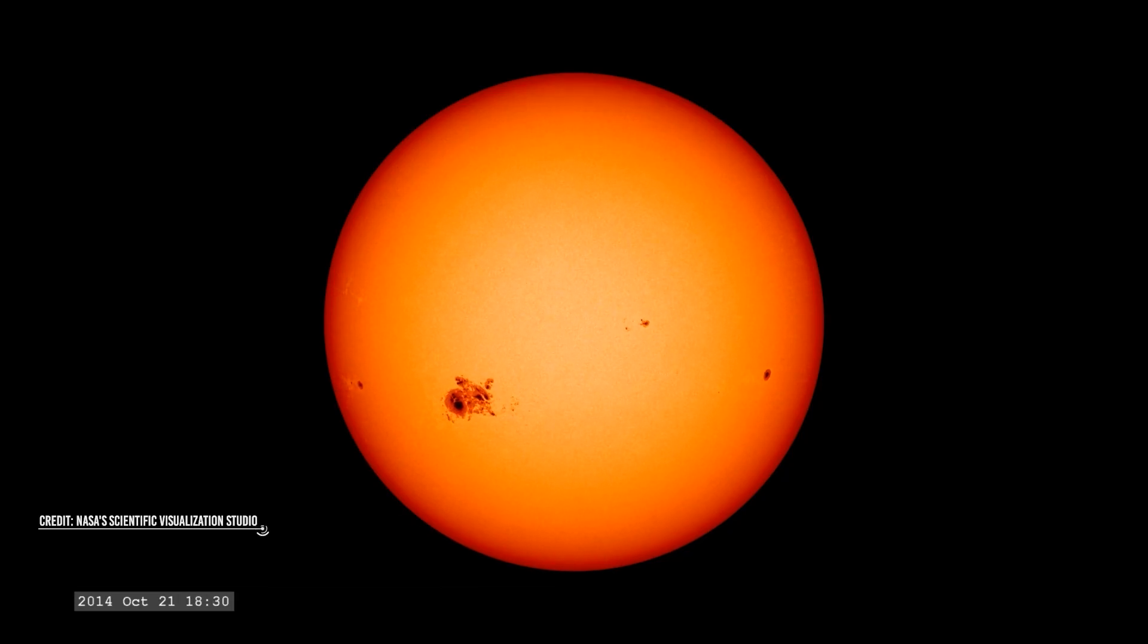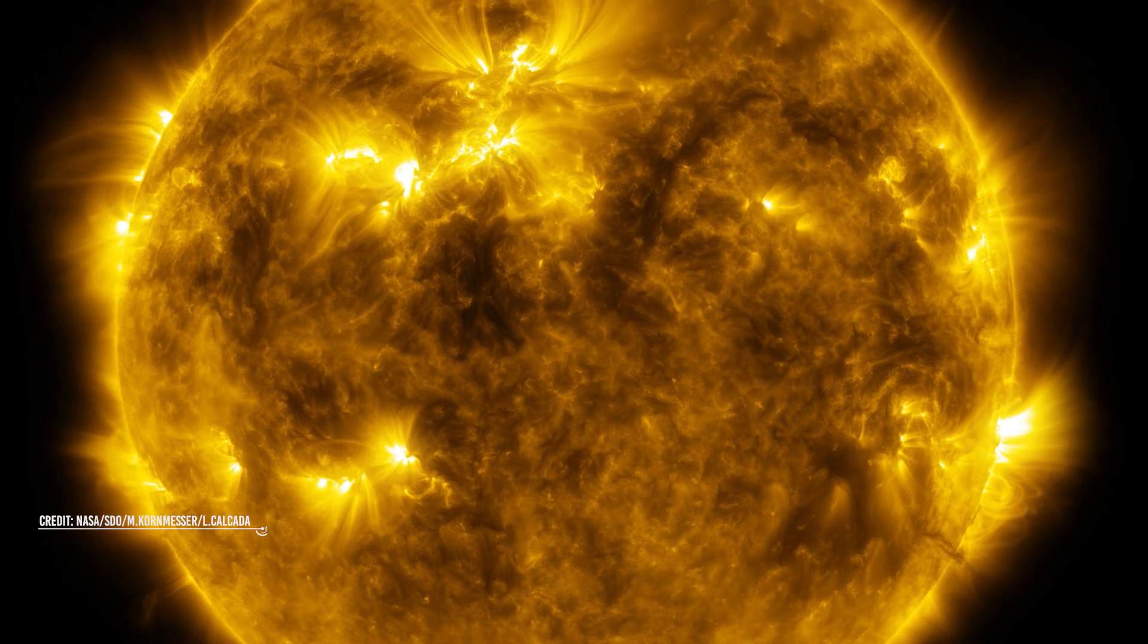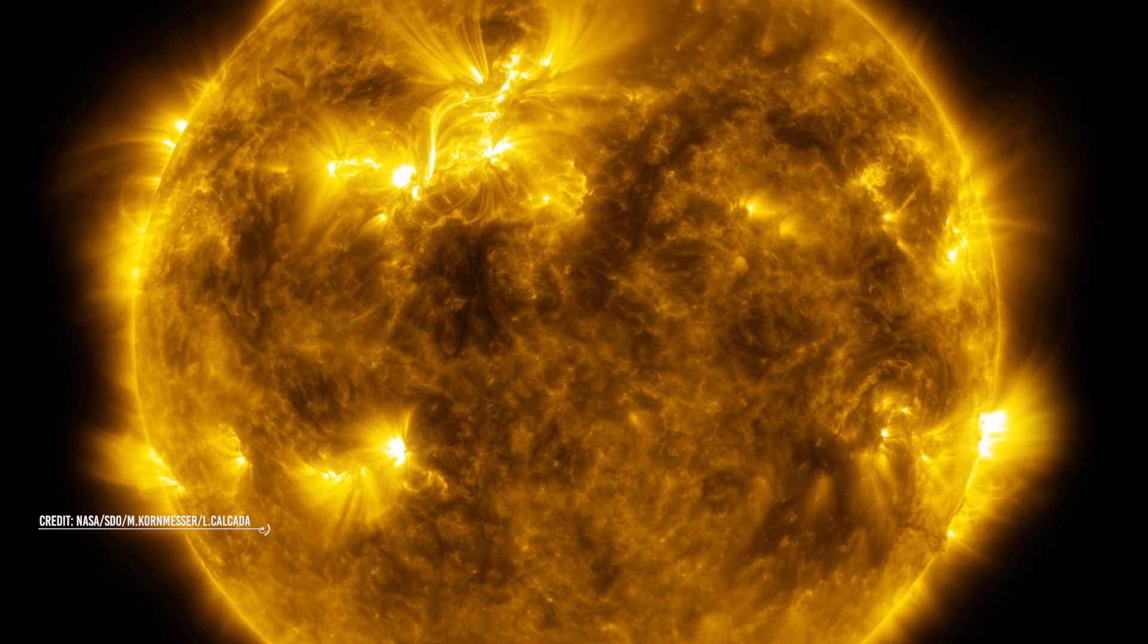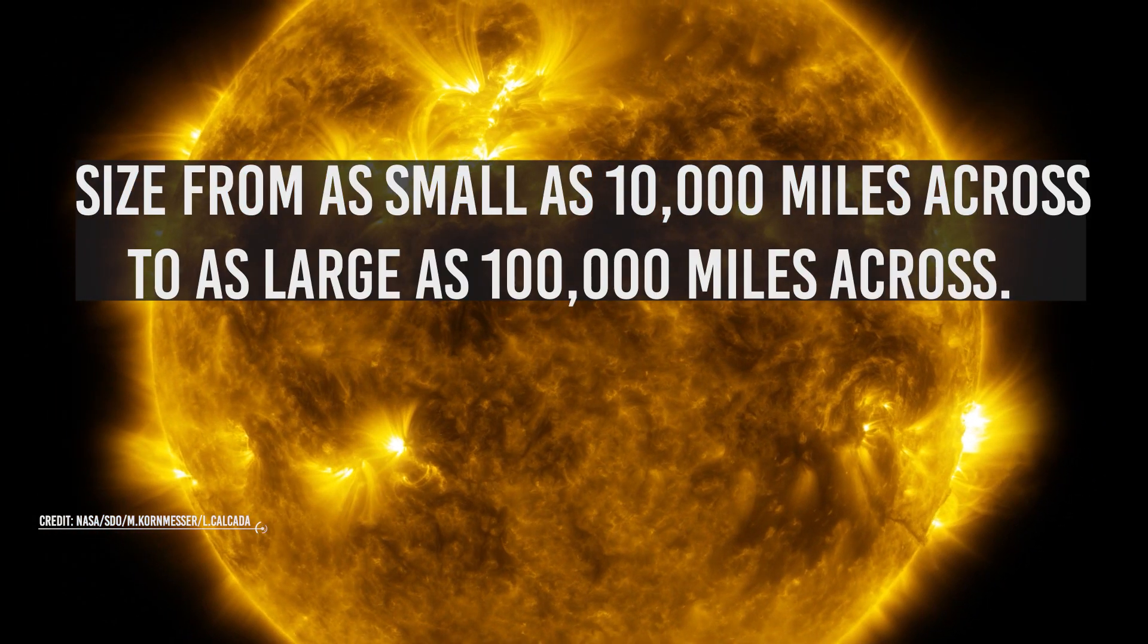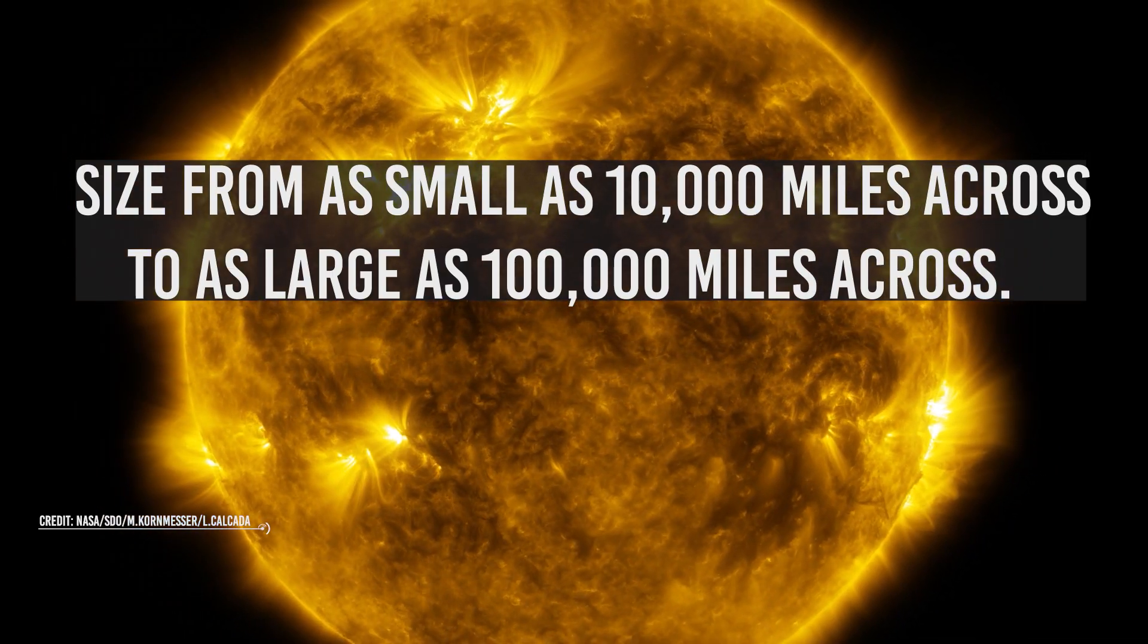Sunspots are not permanent and they can move slowly across the surface of the Sun, changing size as they move. By observing them, in principle, one can get the rotation velocity of the star. The appearance of sunspots on the Sun also follows the solar cycle of 11 years. What does this mean? Every 11 years, there will be a period of increased sunspot activity. Sunspots vary in size from as small as 10,000 miles across to as large as 100,000 miles across.